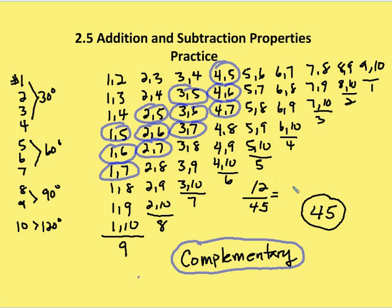I can reduce 12 over 45 by a factor of 3 to get 4 over 15. So my answer is: the probability that I choose 2 angles at random from the 10, and that they are complementary, is 4 out of 15.